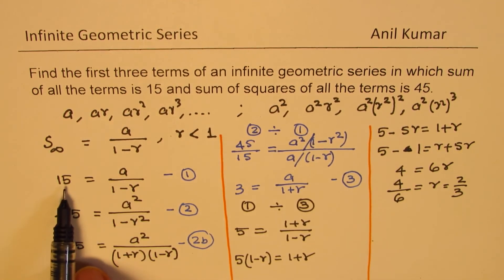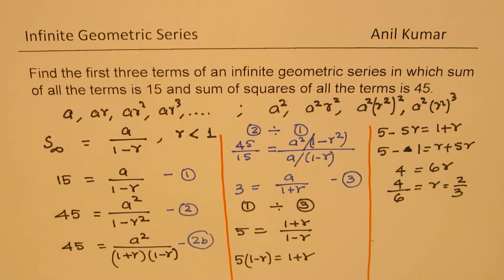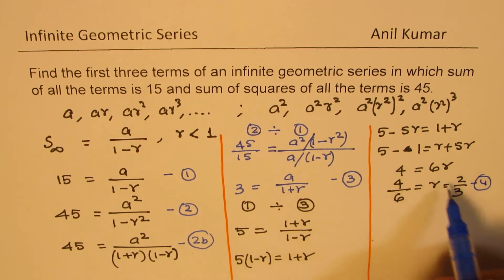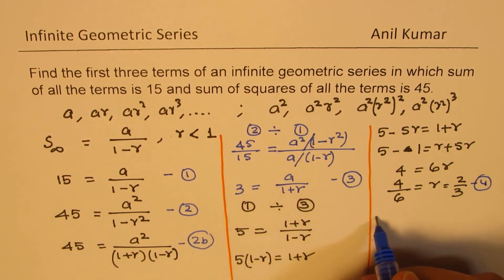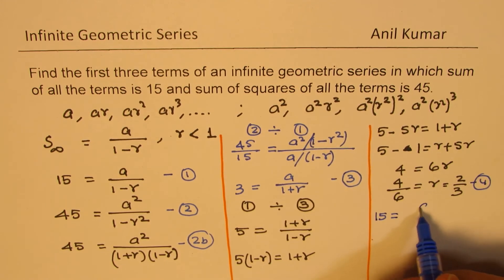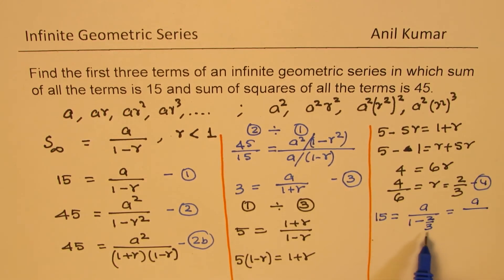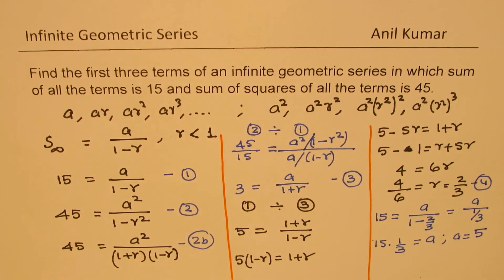Now we can find what A is by substituting this value in our equation number 1. Let's call this equation 4. So when I substitute 4 in 1, I get 15 equals A over 1 minus 2 over 3, which is A over 1 over 3. So it becomes 15 times 1 over 3 equals A, and that gives you the value of A as equals to 5.